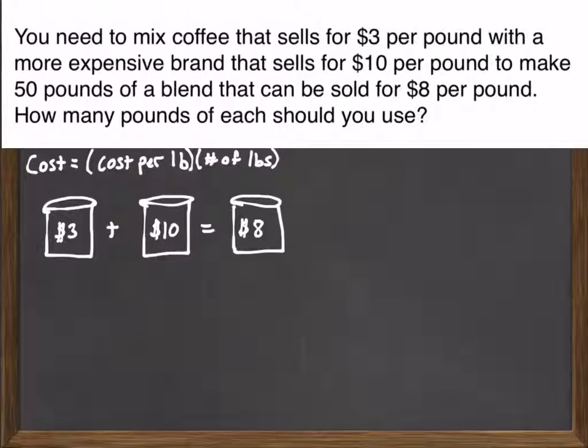Now, in this problem, across the top, we want to place down our amounts. So I know that I want 50 pounds of the blend of coffee in the mixture, and that way it will sell for $8 per pound. What we don't know is how many pounds of the $3 coffee and how many pounds of the $10. So what I've done here is I've labeled them as C and E, C for cheap and E for expensive.